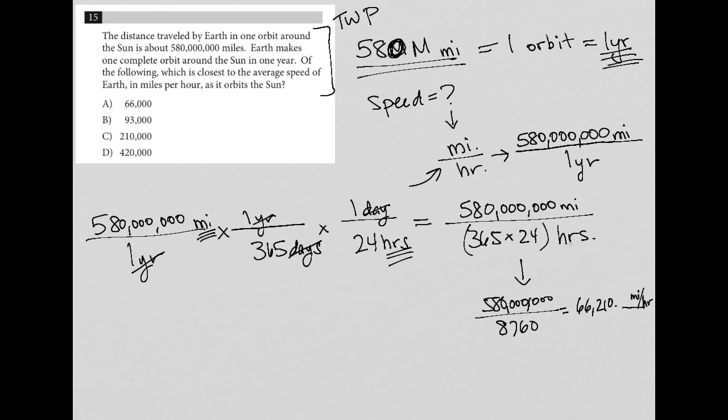So then it does say which one is closest, so not exact. So therefore, my final answer should be 66,000, right? 66,000 miles per hour is closest to what I get by converting one year into hours, knowing that I start off with this 580 million miles.